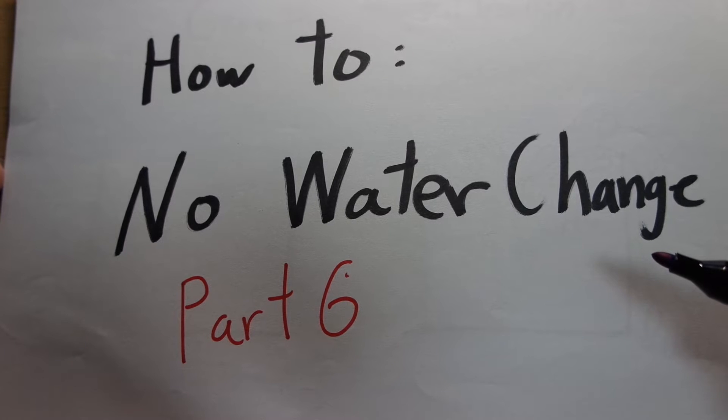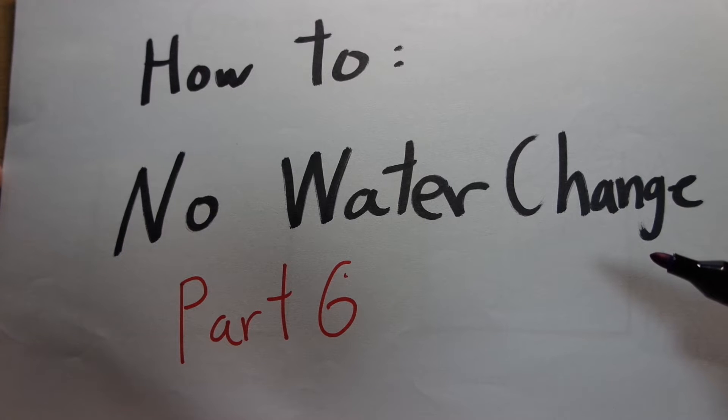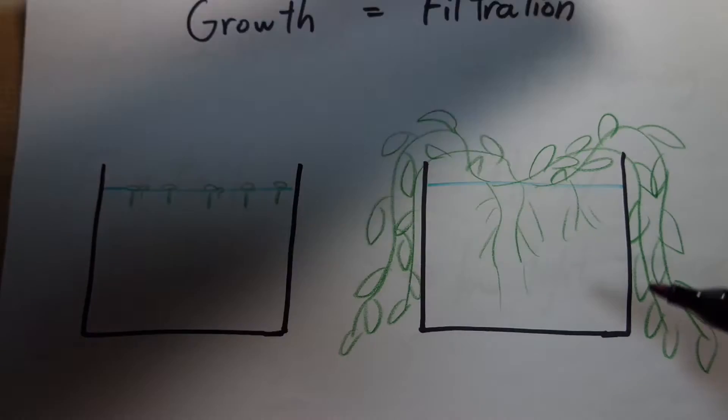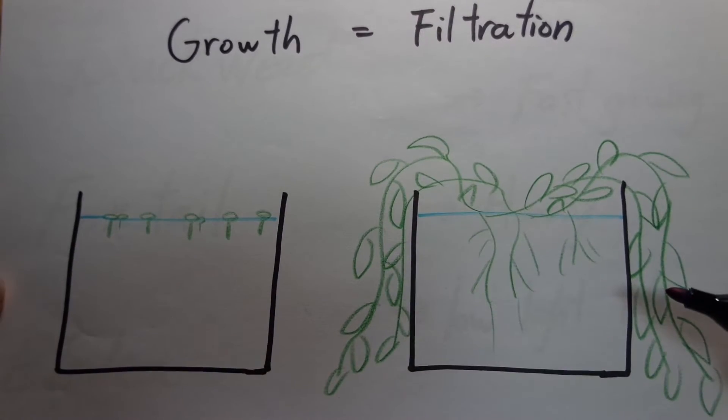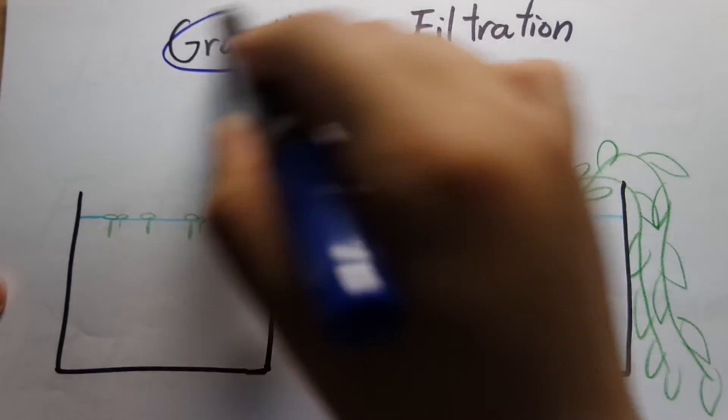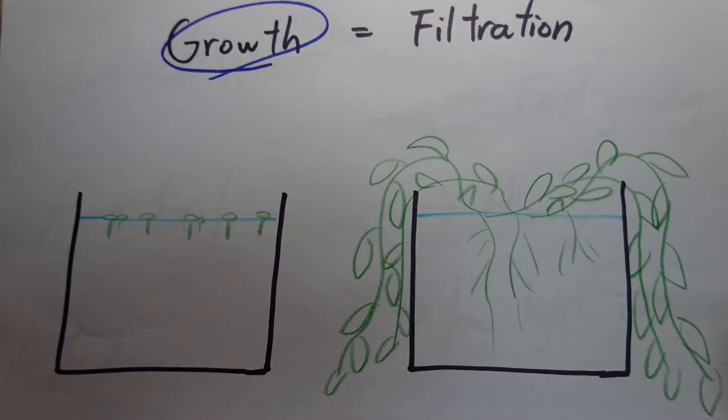There's hundreds of aquatic plants out there that are potential candidates, and I'm just going to point at three that are perfect for filtration. Basically what I have established in my previous parts is that the growth rate is what matters. That is what is equal to the amount of filtration that you're going to get.